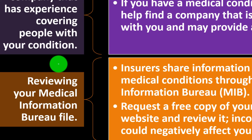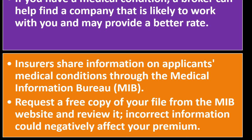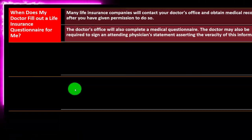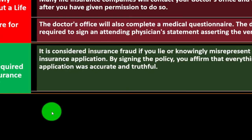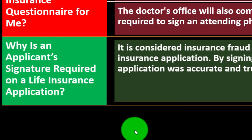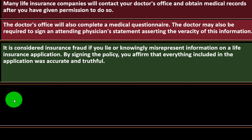Insurers share information on applicants' medical conditions through the Medical Information Bureau (MIB). Request a free copy of your file from the MIB website and review it — incorrect information could negatively affect your premium. Many life insurance companies will contact your doctor's office and obtain medical records after you give permission. The doctor's office will complete a medical questionnaire and may be required to sign an attending physician's statement asserting the veracity of the information. It is considered insurance fraud if you lie or knowingly misrepresent information on a life insurance application, and by signing the policy you affirm everything was accurate and truthful.